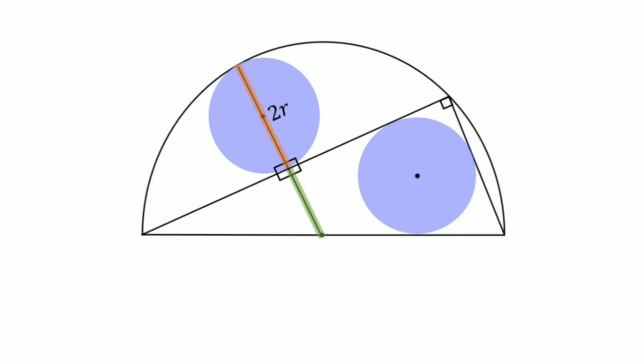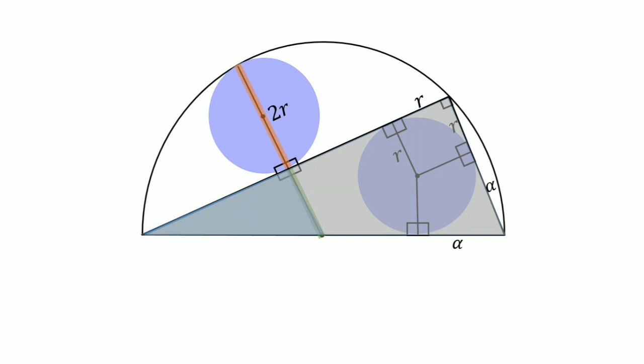Let this be the center of our other smaller circle. Drop the tangential points — we know they are perpendicular. Let the radius of this smaller circle be r, so this is also r and this is also r by our theorem. Drop another tangential point line — this is also perpendicular — and let this side be alpha, so this side is also equal to alpha, and this side is also equal to alpha. Looking at the blue triangle and the square triangle: both triangles are similar because one angle is 90 degrees and one angle is common. Let this side be x, so this side is also equal to x.